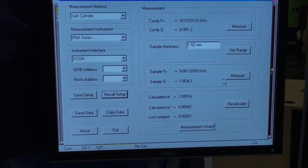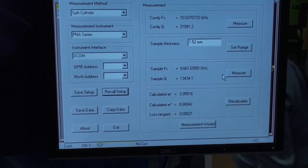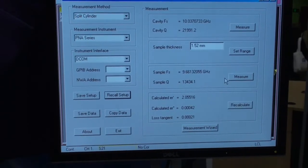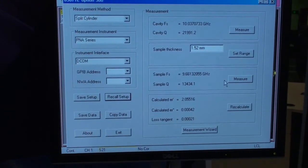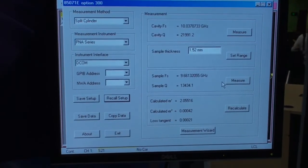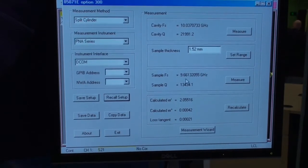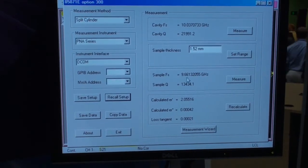And when I measure the sample, when I insert the sample in the fixture, the frequency will shift downward due to the real part of permittivity. So it shifted down to around 9.6 gigahertz.